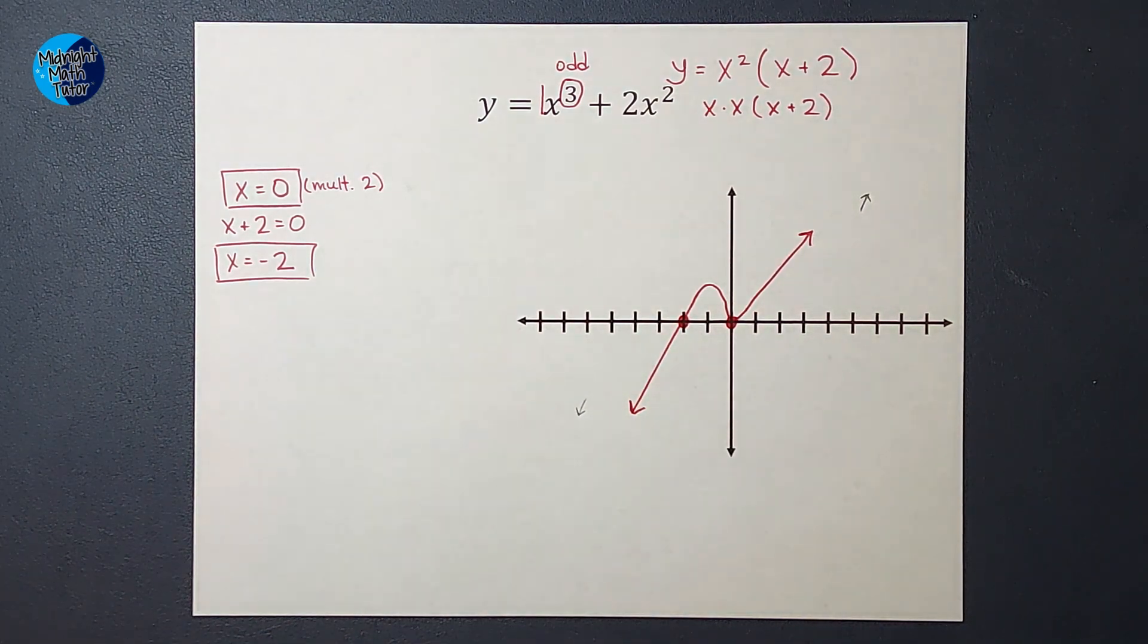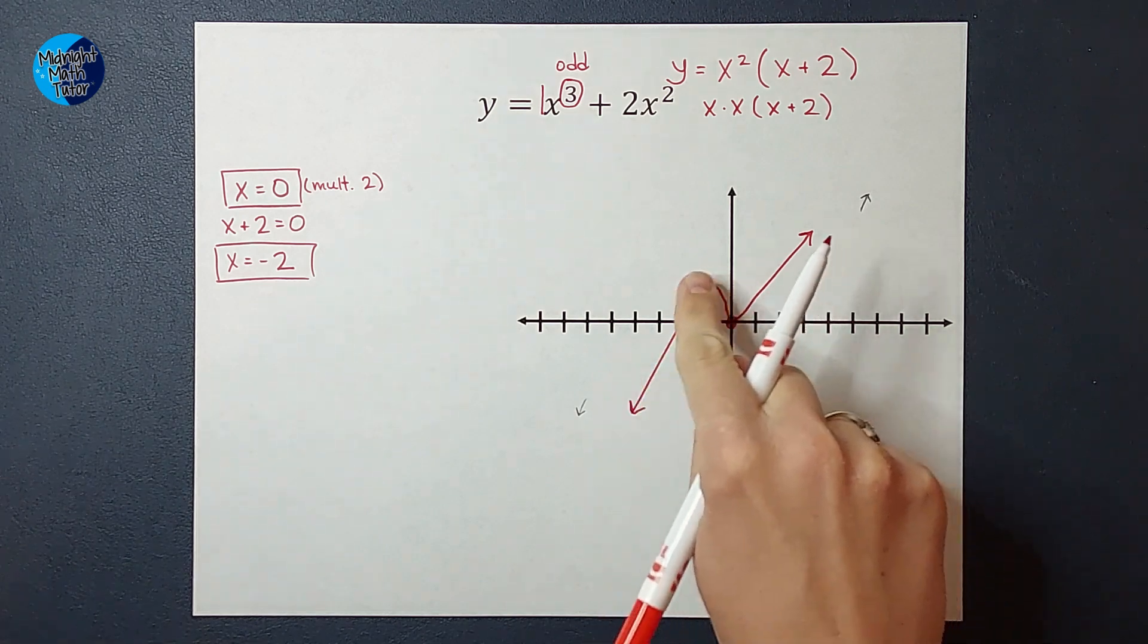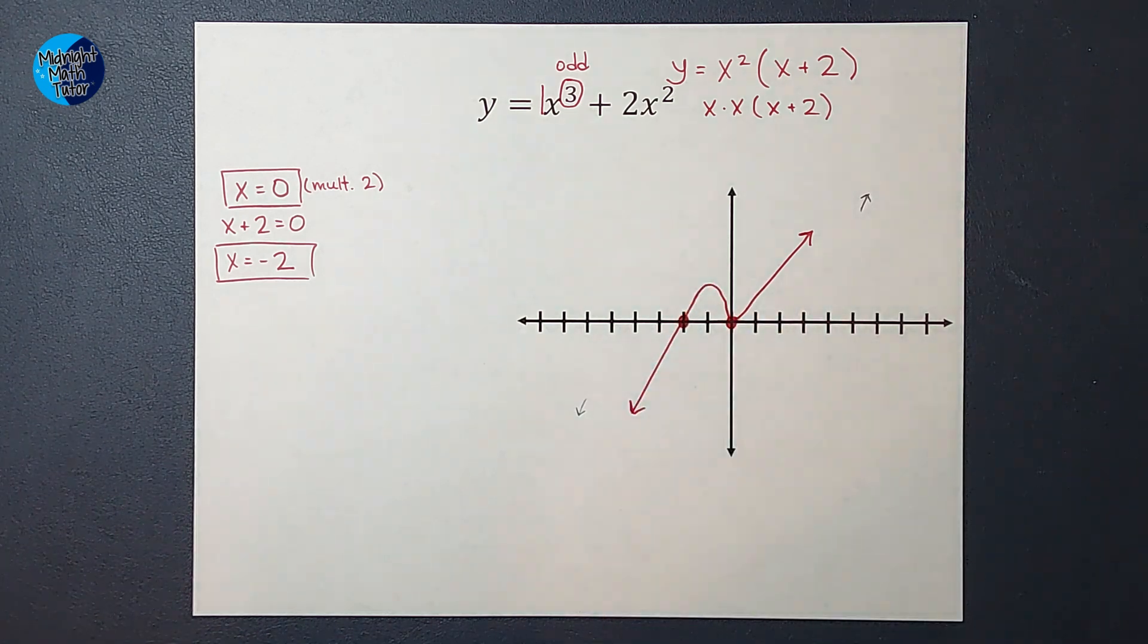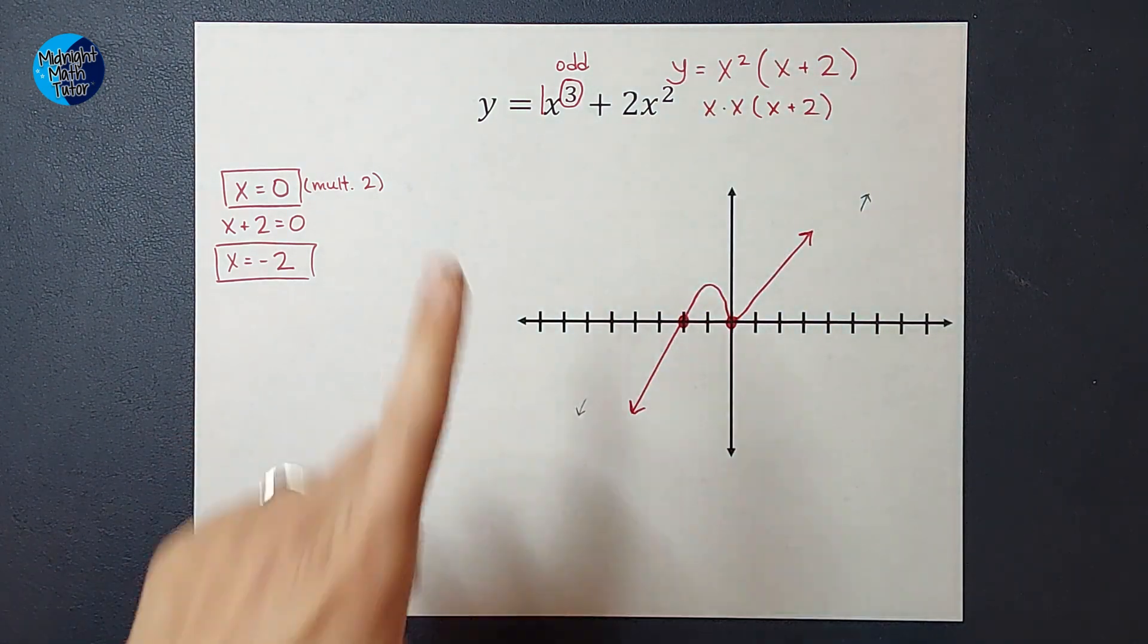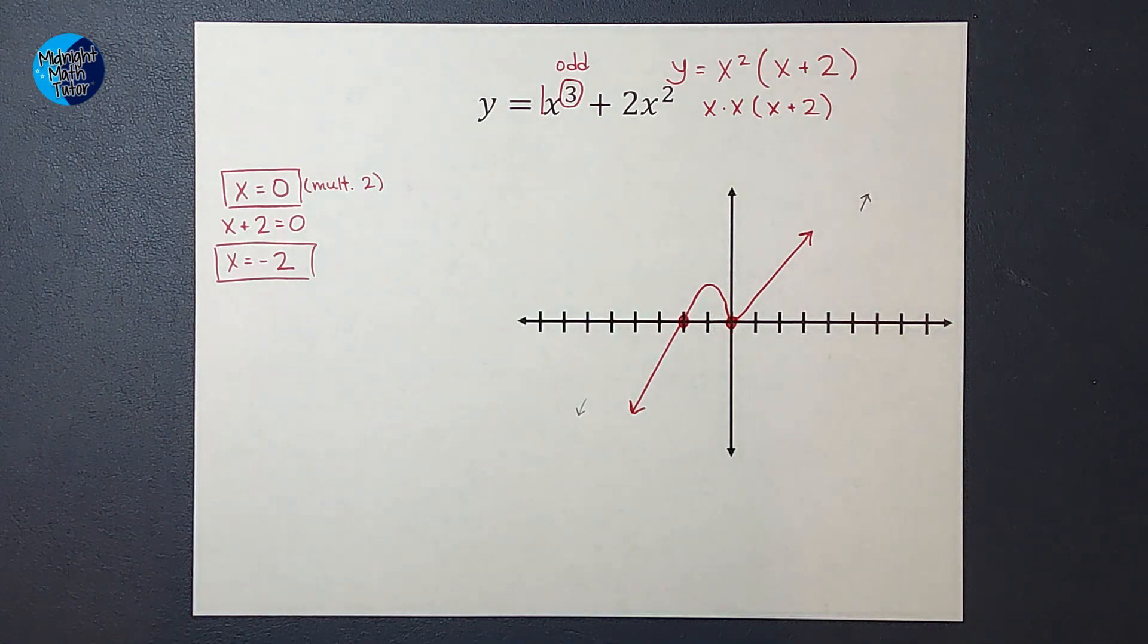So the optional fourth step would be to plug in some points to get some more accuracy on how high these are, but I'm not going to do it right now. If you want to, you go for it. But we just have a rough sketch, so y equals x cubed plus 2x squared looks a little something like this. I hope this made sense. If you need some more examples, I will link a playlist. Thanks, you.